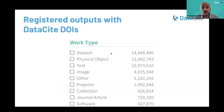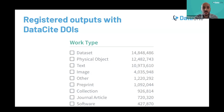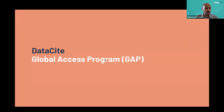Here is a snapshot of the work types that have been registered through DataCite. We have around 14.8 million datasets, 4 million images, 1 million preprints, 12 million physical objects, and around 1 million collections. As you can see, we have an active and wide range of research outputs and resources that have used digital object identifiers.